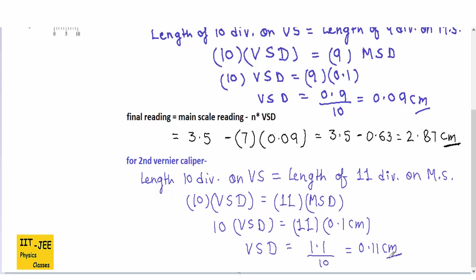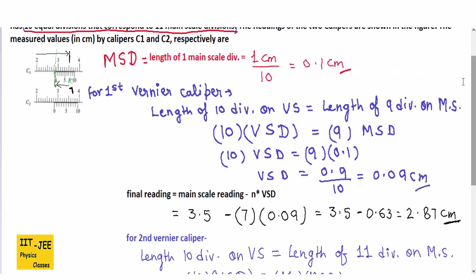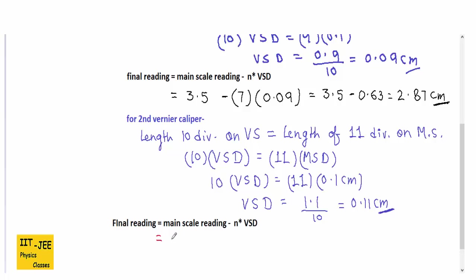Using the same formula for the second vernier caliper, we find the coinciding vernier scale division from the picture — it is the 7th division. The main scale reading up to the coinciding vernier scale division is 3.6 cm. So the final reading = 3.6 − (7 × 0.11) = 3.6 − 0.77 = 2.83 cm.